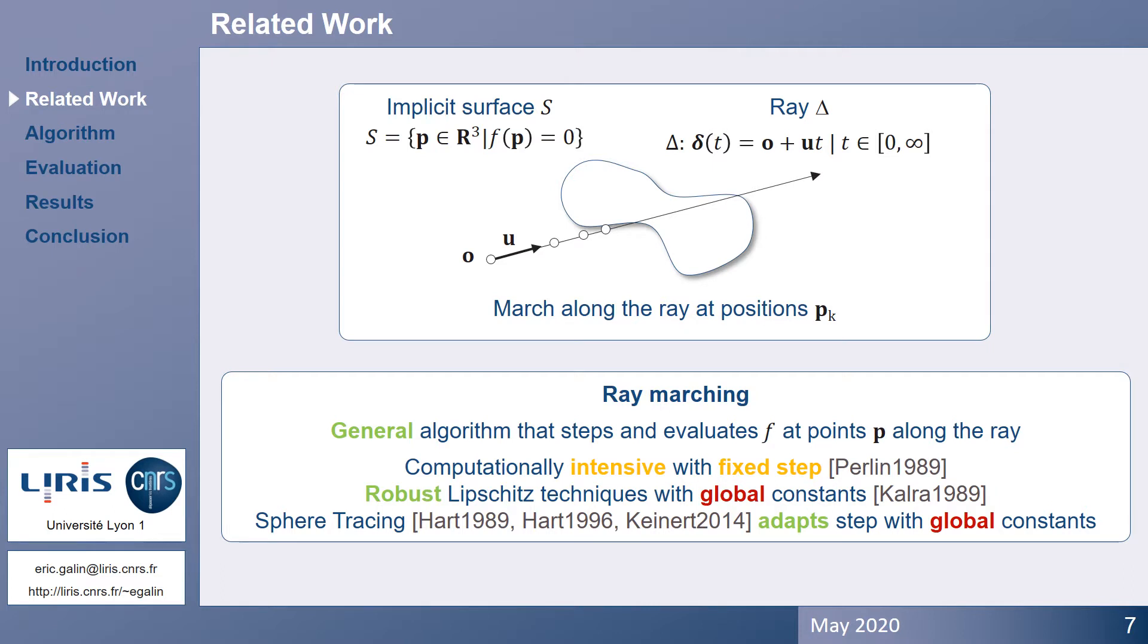Starting from the ray origin, ray marching consists of stepping towards the surface with fixed steps. This approach does not require any knowledge about the field function f, but is computationally exhausting and not robust.